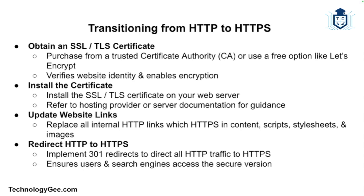Here are the key steps involved in transitioning to HTTPS. First, you want to obtain an SSL/TLS certificate. You need to purchase an SSL/TLS certificate from a trusted certificate authority, or use a free option like Let's Encrypt. The certificate verifies your website's identity and enables encryption. Then you want to install the certificate on your web server. The process varies depending on your hosting provider and server configuration, so refer to their documentation for specific instructions. Then update all internal links on your website to use HTTPS instead of HTTP.